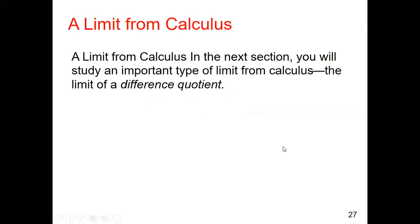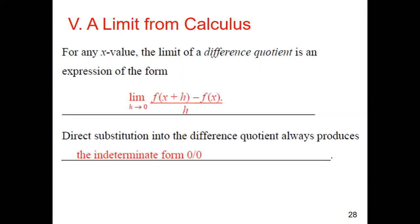So a limit from calculus. This is leading us into the most critical piece of calculus, but we're not quite there. We're going to start off slow. What we're going to be using is what's called the difference quotient, the limit of our difference quotient. For any x-value, the limit of a difference quotient is an expression of the form: the limit as h goes to zero of f(x + h) minus f(x) divided by h.